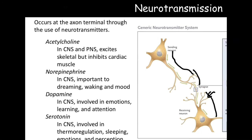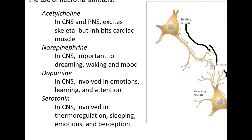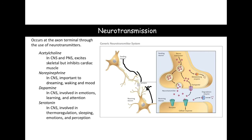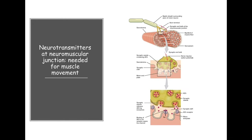Another type of neurotransmitter is norepinephrine, which is more found in the central nervous system, along with dopamine and serotonin. Some of these are involved in emotions, and if they are dysregulated or not balanced correctly, it can lead to anxiety or depression. In the peripheral we see acetylcholine; in the central nervous system we see norepinephrine, dopamine, and serotonin. There may also be excess neurotransmitters present, so degradation enzymes are produced to eliminate the neurotransmitters that are not needed.